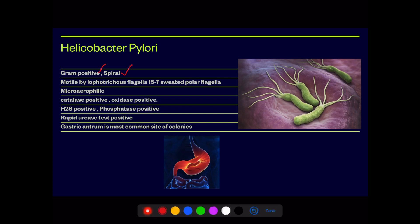You can see it's spirally, rod-like shape, and flagella are present towards one end. It is motile because of the presence of a bunch of flagella on one side, that is lophotrichous.